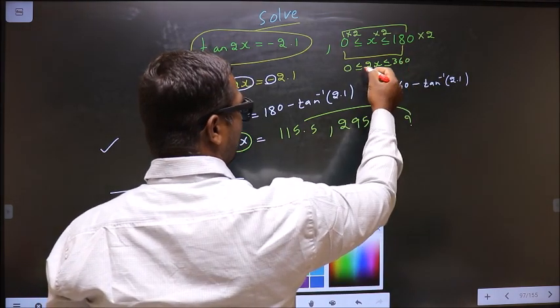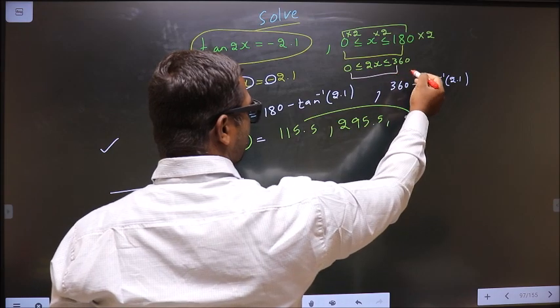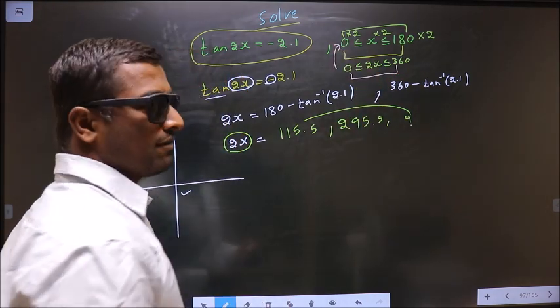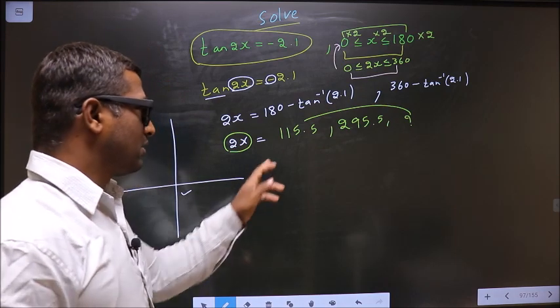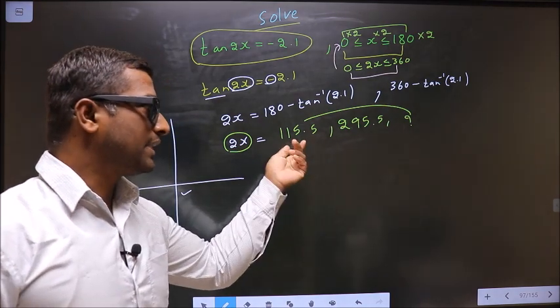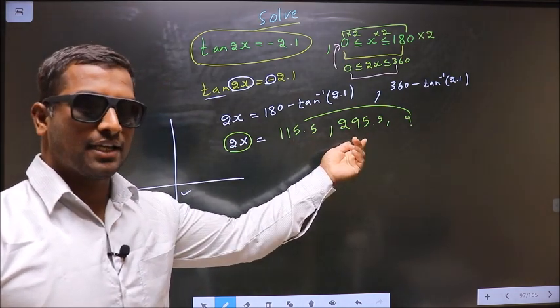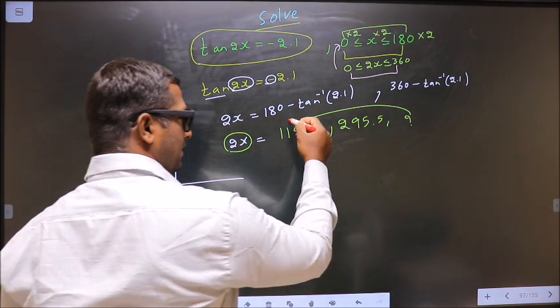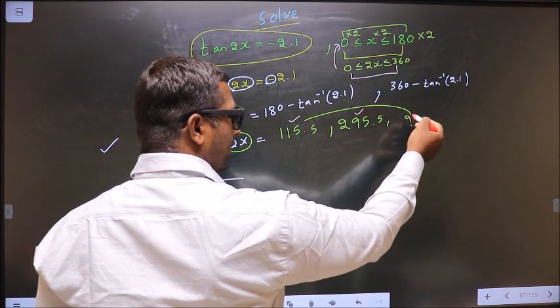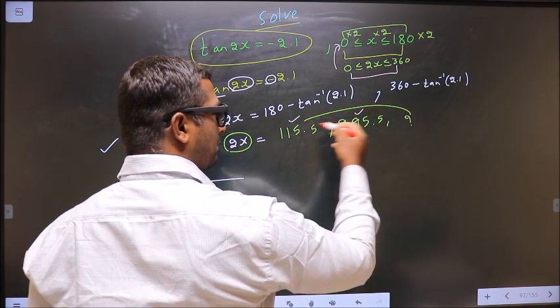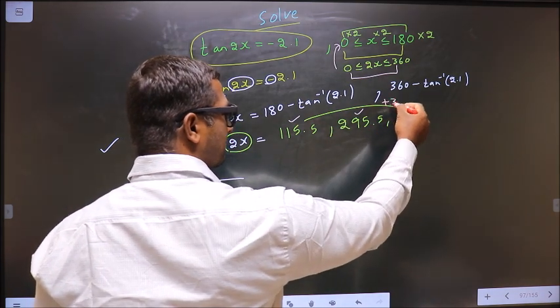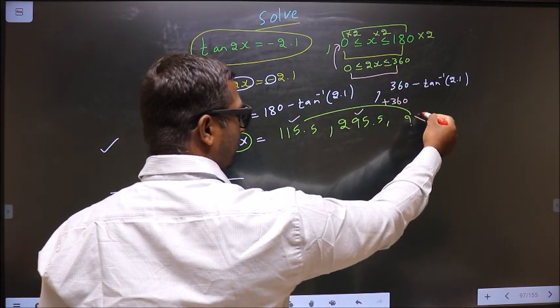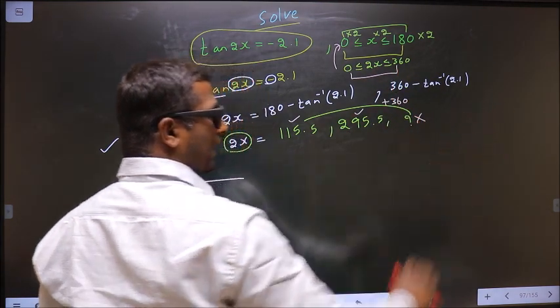Now, when 2x lies in the interval 0 to 360, automatically x will lie in the interval 0 to 180. So, here you should check whether these values lie in the interval 0 to 360 or not. These 2 lie. If I find another angle by adding 360 to this, that will not lie in this interval. So, I do not need to find any more angles.